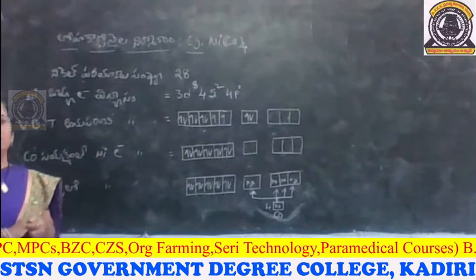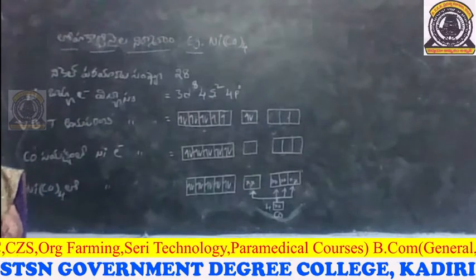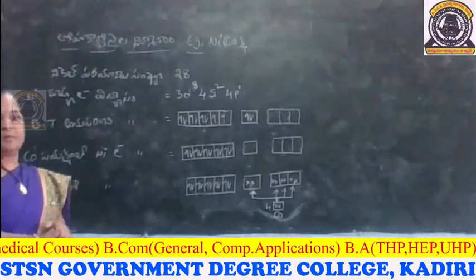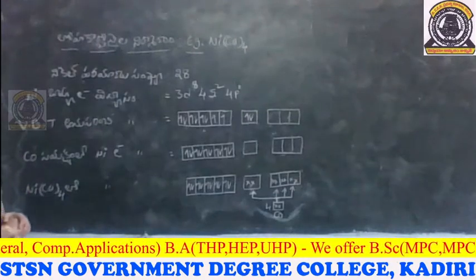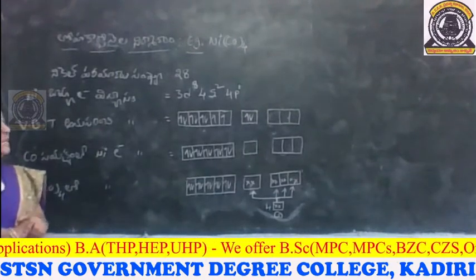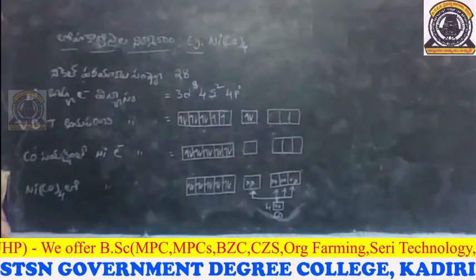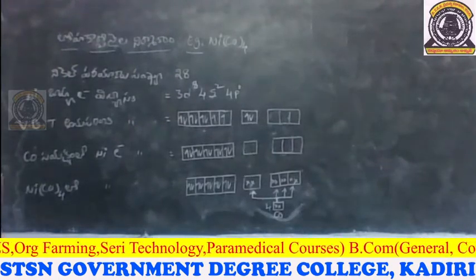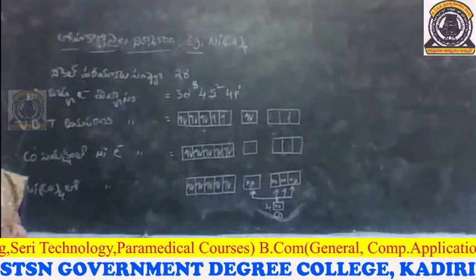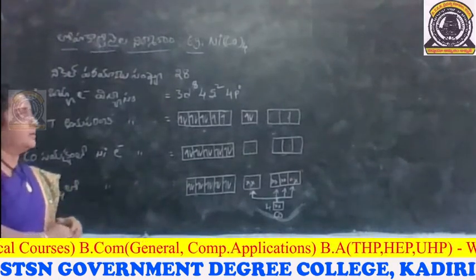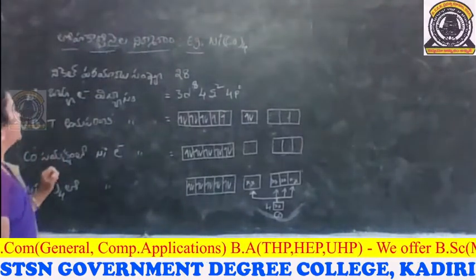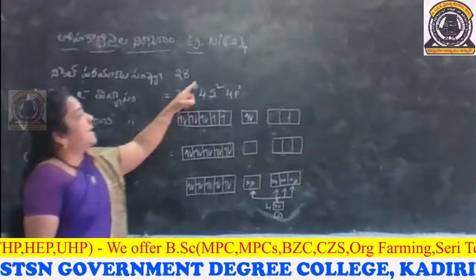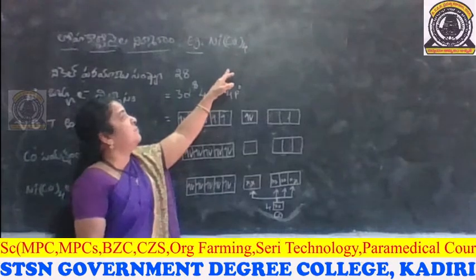So in the last training, we will get a lot of carbonyls. So in this class, we will get a lot of carbonyls. This example is that the nickel tetracarbonyl — carbonyls are very important.